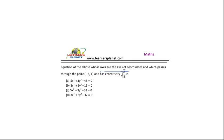Find the equation of the ellipse whose axes are the axes of coordinates, which passes through the point (-3, 1), and which has eccentricity √(2/5). We need to find the equation of this ellipse.